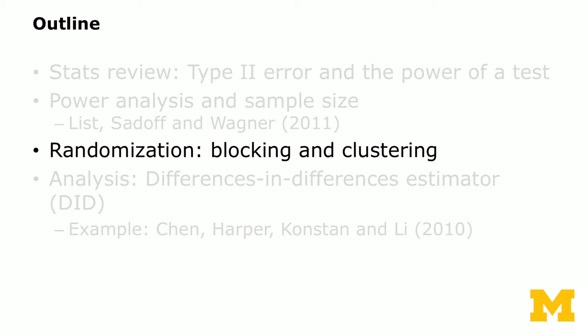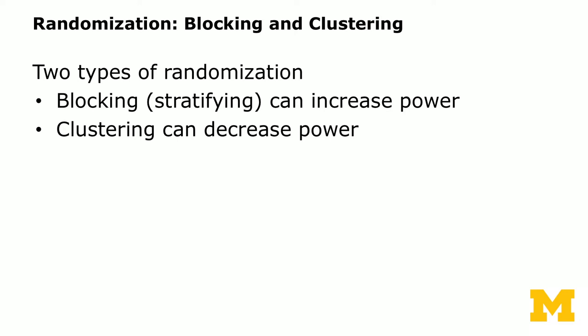They're both very useful, and we're going to use some examples to show how to use these. The two types of randomization we often see, in addition to simple randomization and complete randomization mentioned in week one, are blocking — sometimes called stratifying — and clustering. Blocking or stratifying increases power, whereas clustering can decrease power, and we're going to show why.